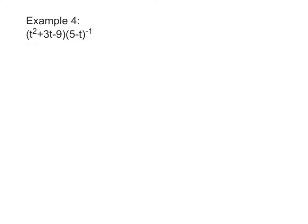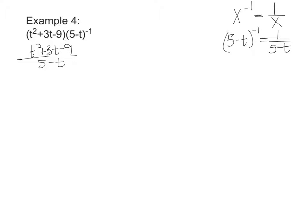Here's our next example. This is a funny-looking problem — it makes us think we should be multiplying — but we need to remember that X to the negative 1 power is equal to 1 divided by 5 minus T, which really makes this T squared plus 3T minus 9 over 5 minus T, meaning I'm dividing by 5 minus T. To keep it consistent with how I've been doing the problems, I'm going to rewrite 5 minus T as negative T plus 5.